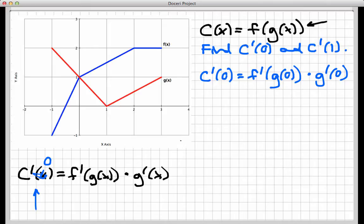I'm going to switch to green and see what I can do with this. First of all, I need to know what g(0) is. Well, g(0), pretty clearly, that would be 1, that's happening right there. So I can make one substitution into this formula here. g(0) is equal to 1 according to the graph. So c'(0) is now going to be f'(1), that's using that substitution, times g'(0).